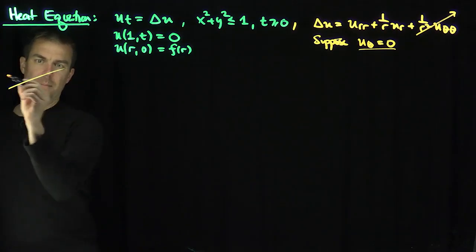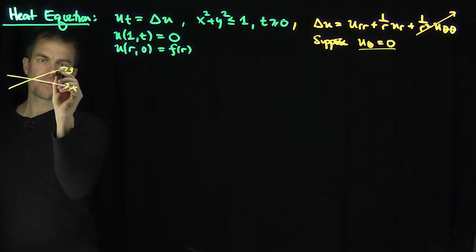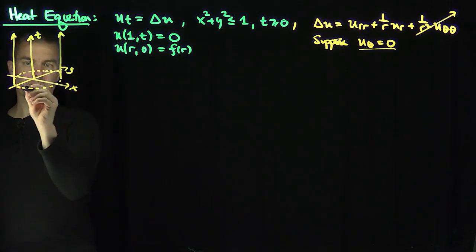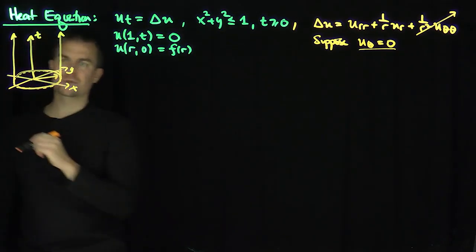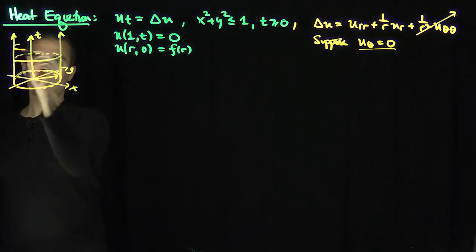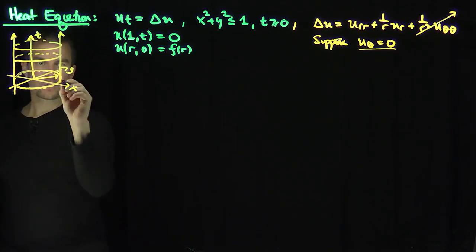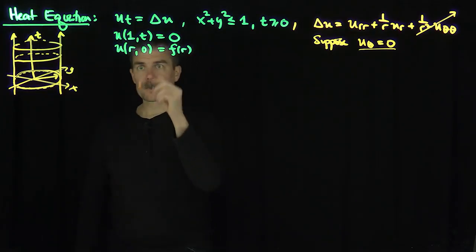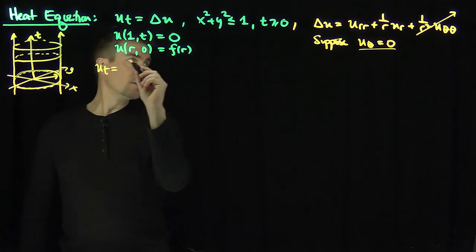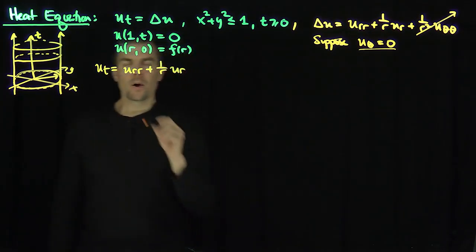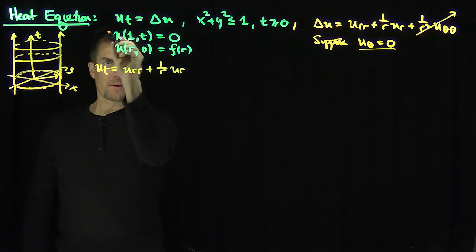Imagine a situation with x and y axes, which we express as r and θ, with the unit circle as boundary. We're thinking of this as a cylinder, with the temperature distribution having no angular dependence. Each circle gives the temperature of that disc at a different time, and we only consider time going in a positive direction. Our PDE becomes u_t = u_rr + (1/r) u_r, with boundary condition u(1, t) = 0.